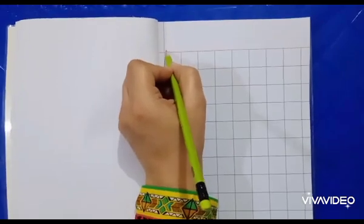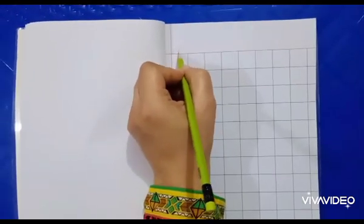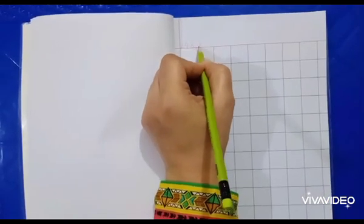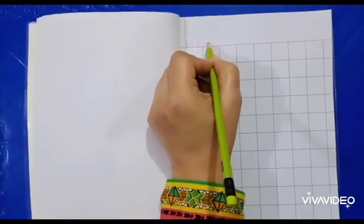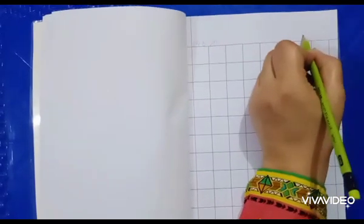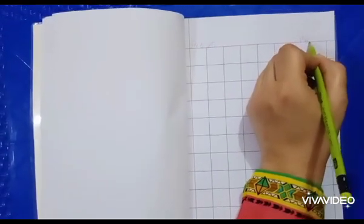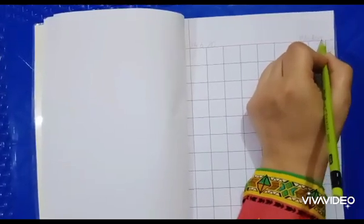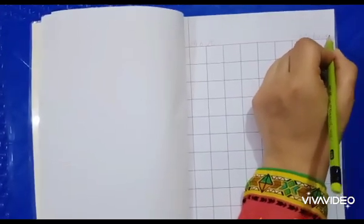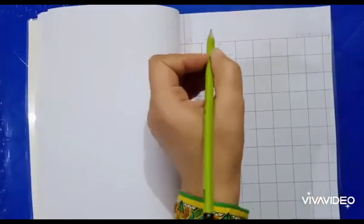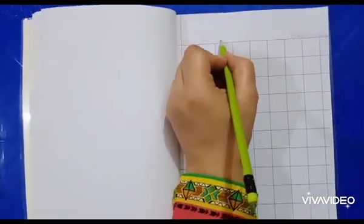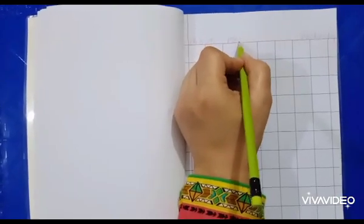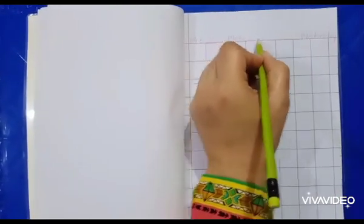First we mark the date here: 24.6.20, and write day in that corner. Today is Wednesday. Our topic is write numbers. We will write the topic in the center.